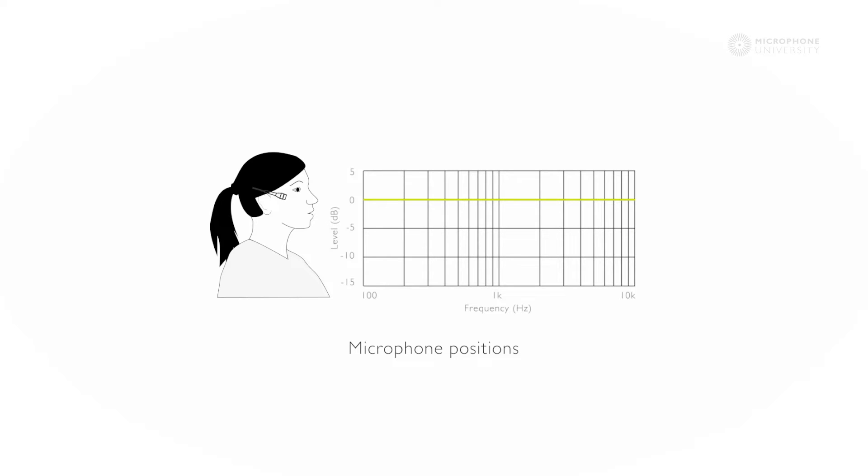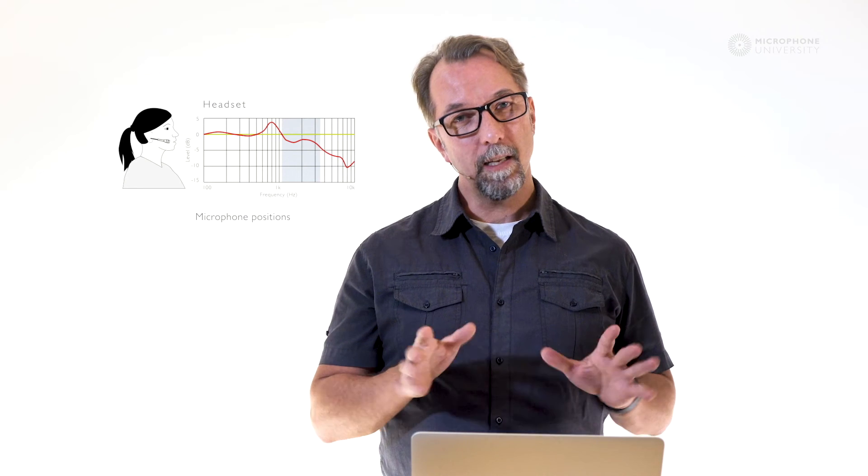Next position is the headset position. It's not as far behind the mouth as the ear position, so the high mids in the 2 to 3 kHz range are not as attenuated as before. There's a bit more of the mid-range, where the consonants are predominant, so there are many good reasons to use the headset position, but it is still lacking a bit of the speech intelligibility compared to the forehead position.